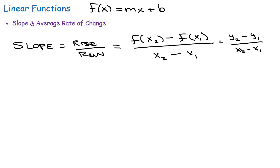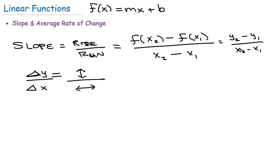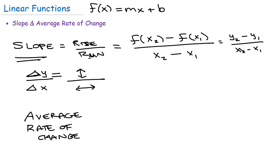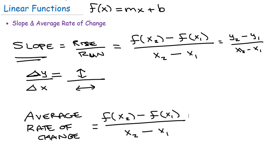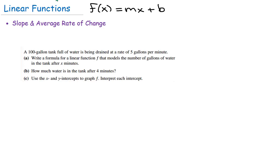It's basically what is the change in the y values divided by the change in the x values. The triangle symbol is a Greek letter delta — it means 'change in.' So the change in y divided by the change in x: how far are you moving vertically on your function divided by how far you're moving horizontally. That's the idea of slope. The average rate of change is essentially equal to this same slope formula between two points.